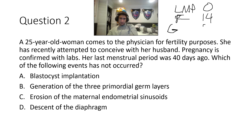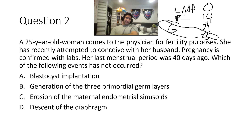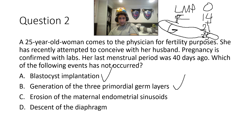Second question: her last menstrual period is the baseline — day zero. Fertilization and ovulation occur around day 14. Gastrulation occurs in the third week of human development — 21 days from fertilization — so by day 35 from the LMP, gastrulation is complete. If her last menstrual period was 40 days ago, the blastocyst has implanted, the three primordial germ layers have formed, and the maternal endometrial sinusoids have been eroded. The diaphragm has not yet formed — that is the event that has not occurred.